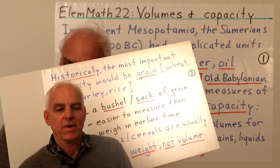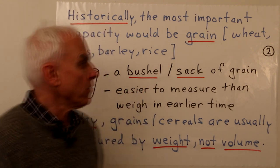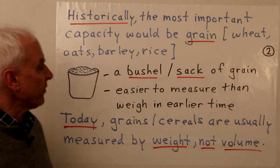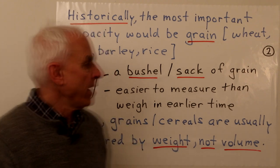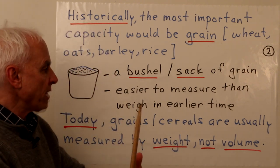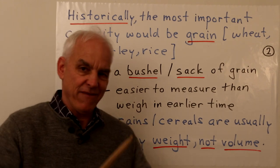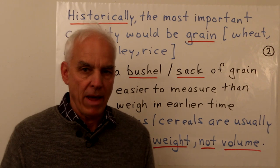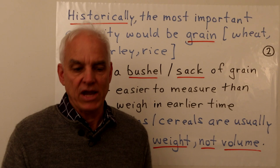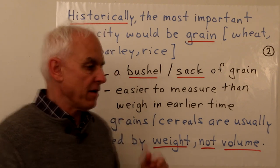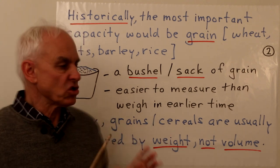Historically, the most important capacity would have been grain — wheat, oats, barley, rice, etc. We might measure a bushel or a sack of grain representing a certain quantity, which was easier to measure than weighing it. In former times, weighing heavy sacks was more problematic, so volume or capacity was perhaps more commonly used for describing how much grain one had.